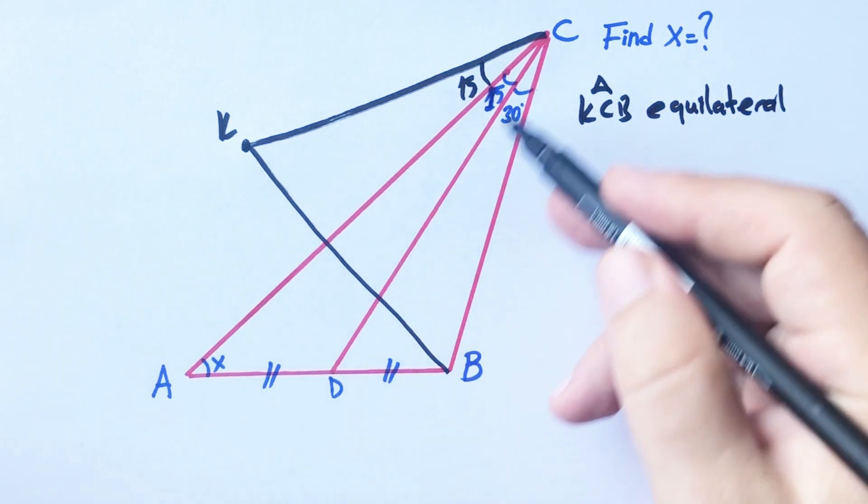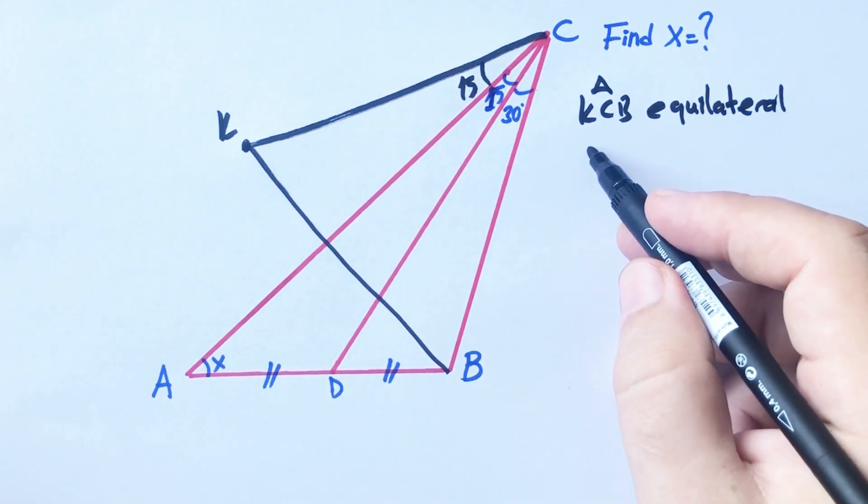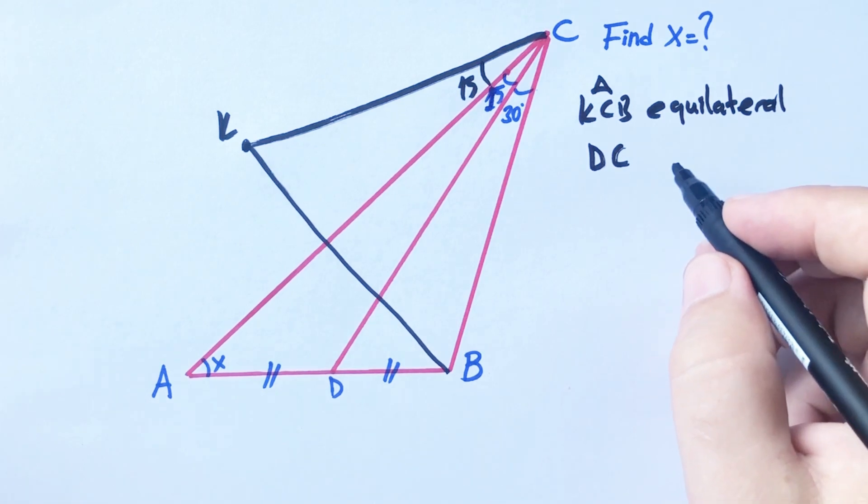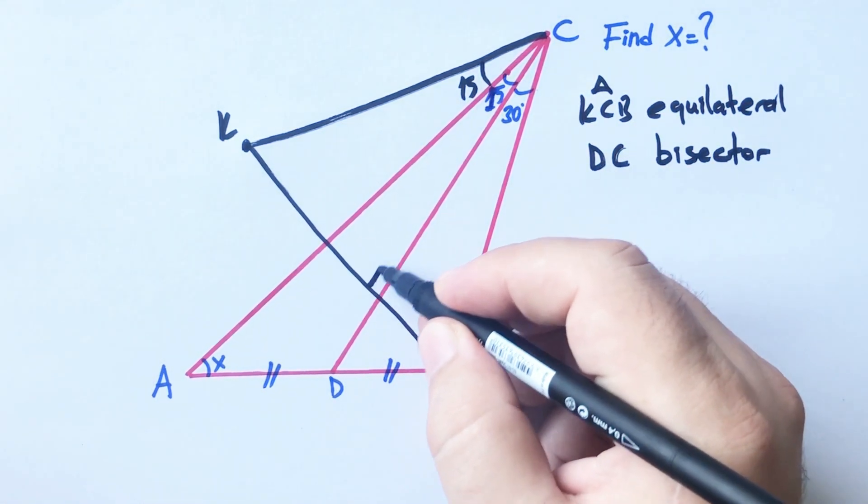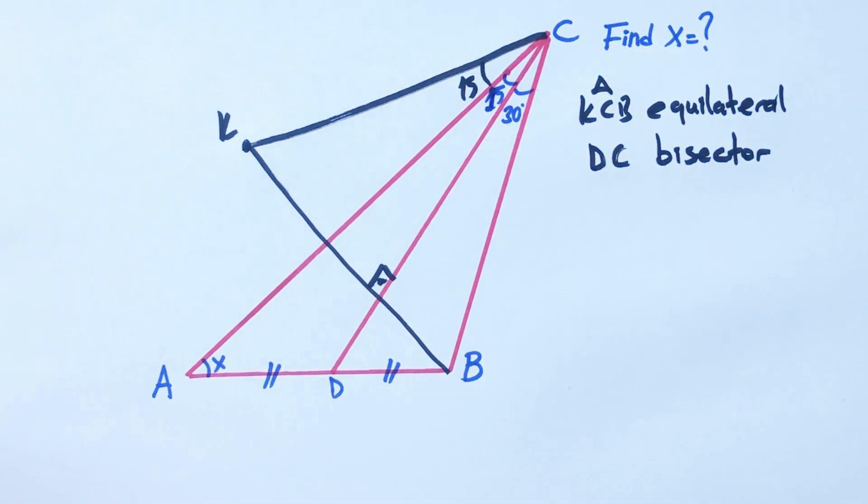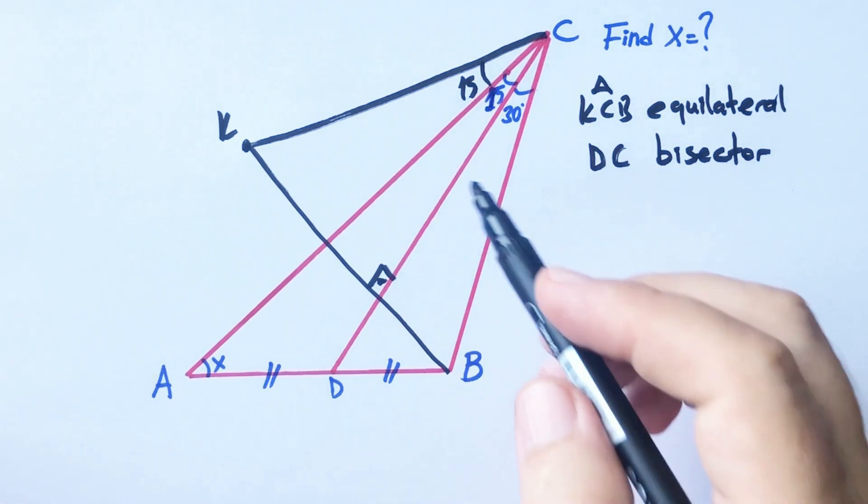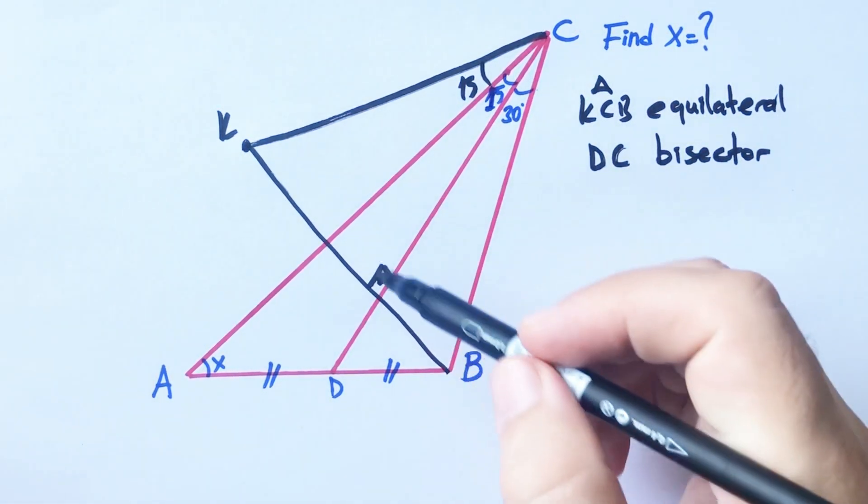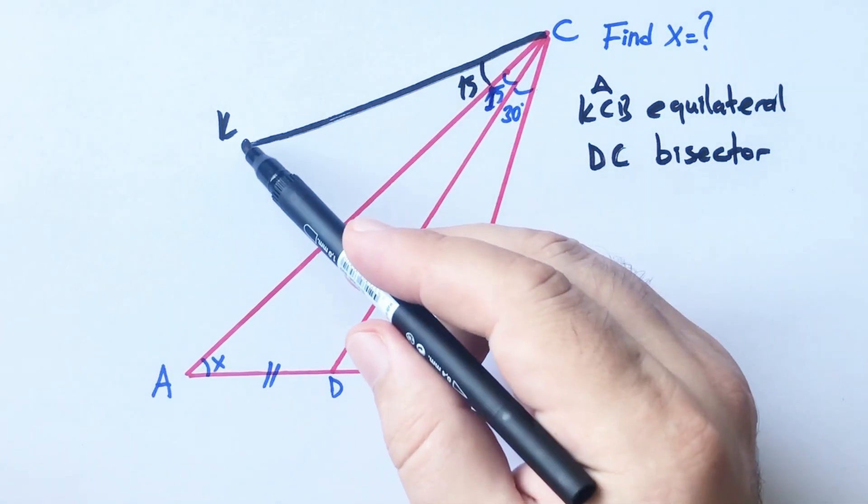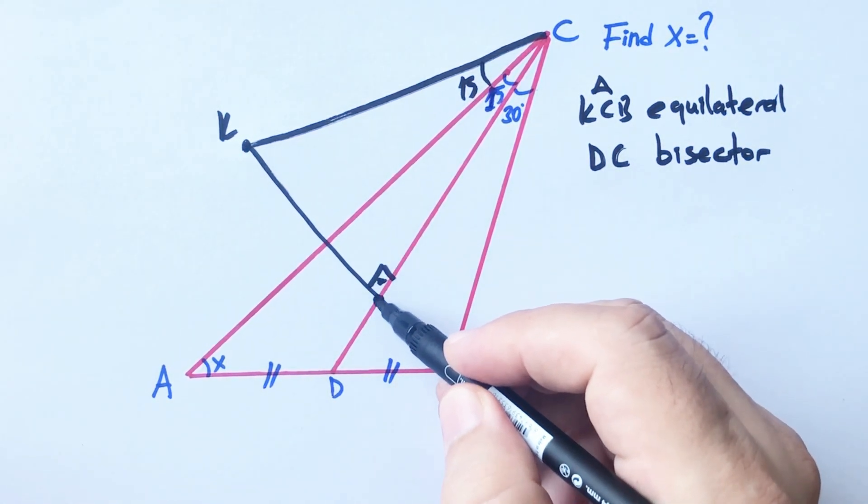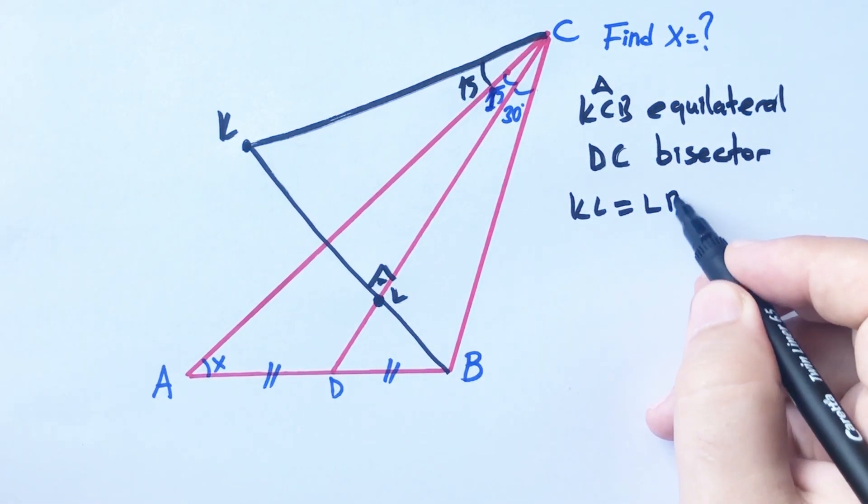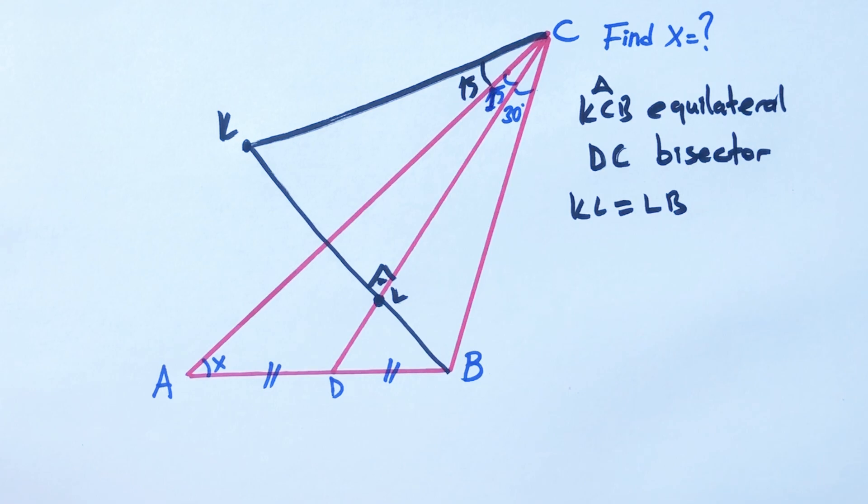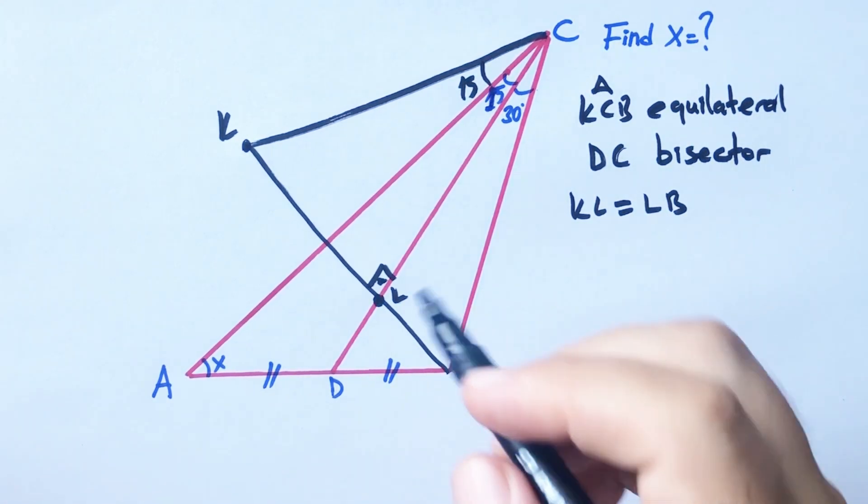DC is a bisector line. This angle must be 90 degrees because in an equilateral triangle, the bisector line is also height and midpoint. Let's call this point L. Therefore, KL must equal LB.